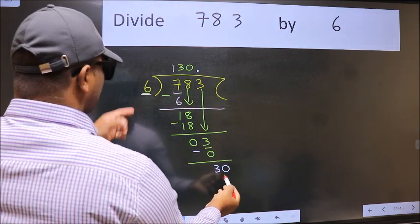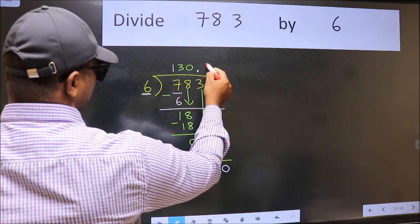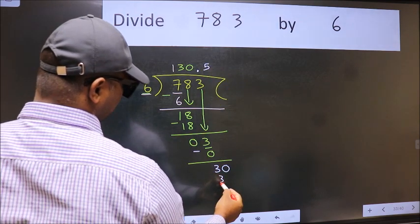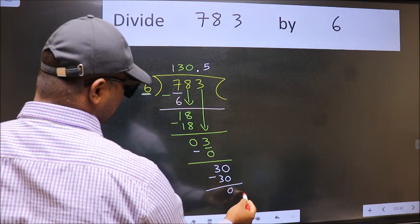So 30. When do we get 30 in 6 table? 6 times 5 is 30. Now we subtract. We get 0.